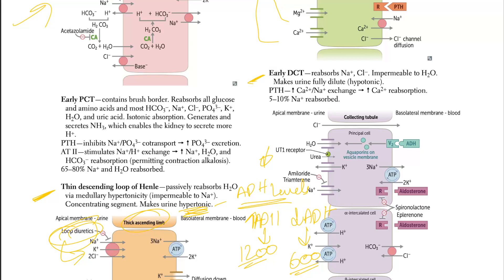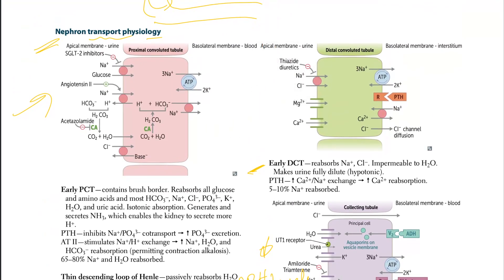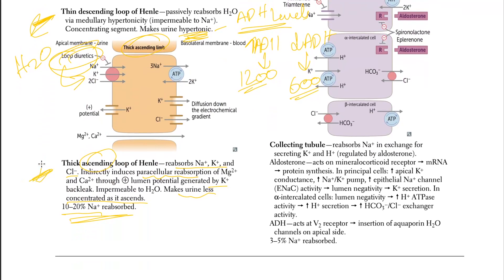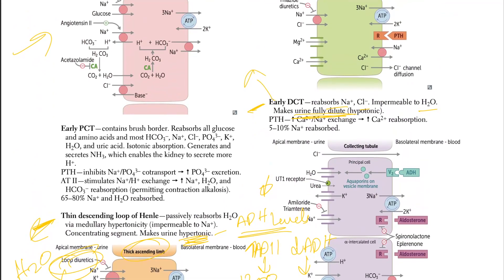DCT reabsorbs, and you can look at this picture up top, reabsorbs sodium and chloride. It is impermeable to water and makes urine fully dilute. Again, going back, we just had, let's say we were taking water here and here we're just taking out all solutes. Again, here we are taking out all the solutes that we have. So we are left with such a dilute kind of urine, which is hypotonic because we are taking out all the solutes. So it's just hypotonic at this stage. So what is the PTH is going to do is again, is calcium sodium exchanger, leads to increase calcium reabsorption. Again, five to 10% of sodium reabsorbed.